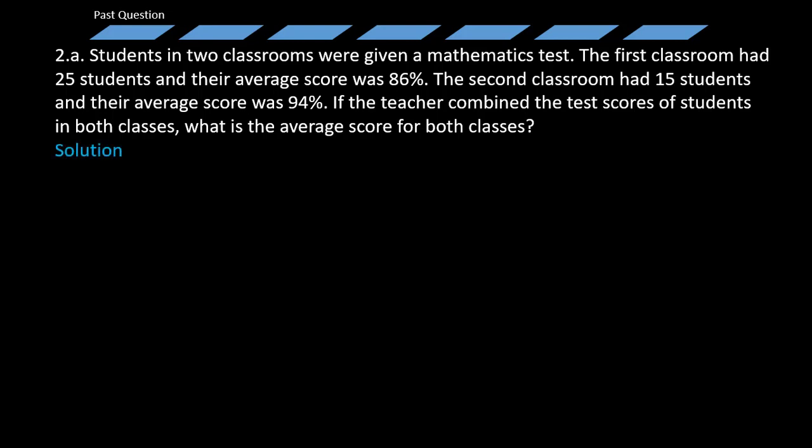Solution: First of all, they are talking of average. It's synonymous to the word mean. How do we normally compute the mean? The mean is normally gotten by summing up the total values involved in the data set and dividing it by the total number of data sets or values you have.